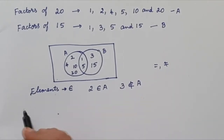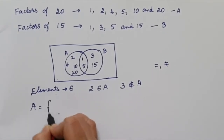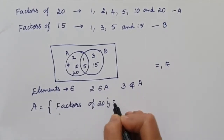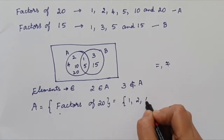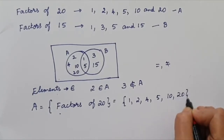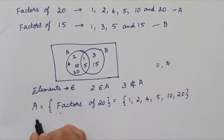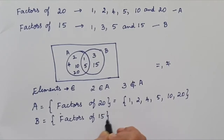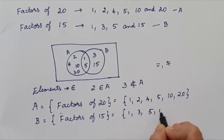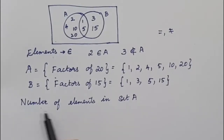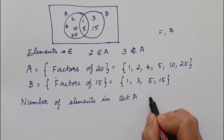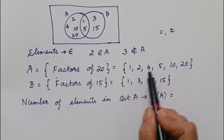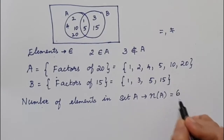We can now describe A and B as sets. A equals the factors of 20, which equals {1, 2, 4, 5, 10, 20}. We write the elements inside the set bracket. In the same way, B equals the factors of 15, which equals {1, 3, 5, 15}. The number of elements in set A is represented as n(A). We count: 1, 2, 3, 4, 5, 6. So n(A) equals 6.